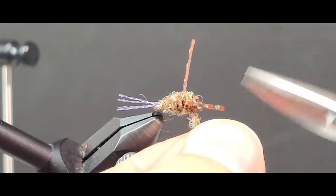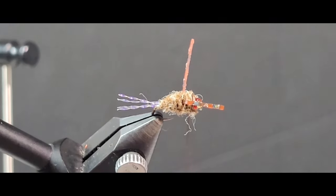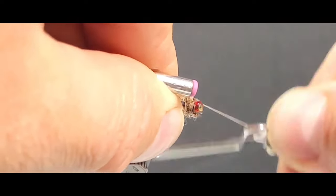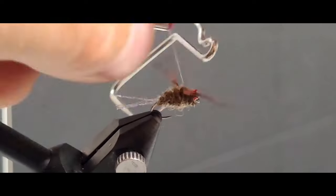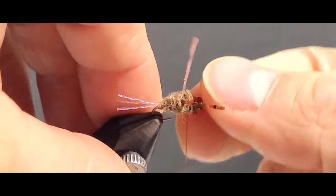As you finish up, give it a couple of securing wraps behind and in front of that. Trim off the excess there and then we're going to do a whip finish just behind these eyes. You can secure that really nice.